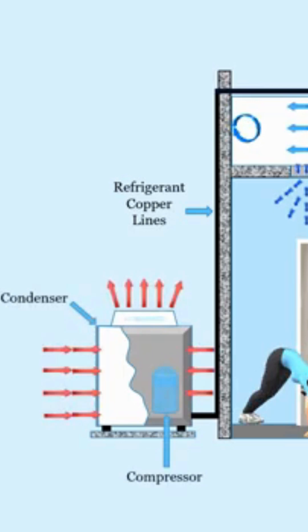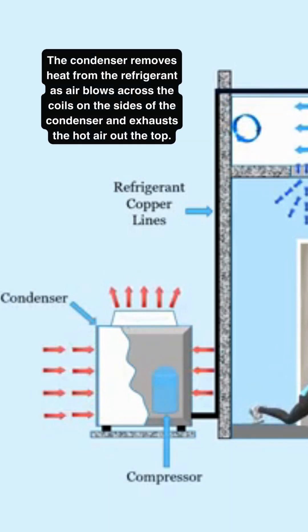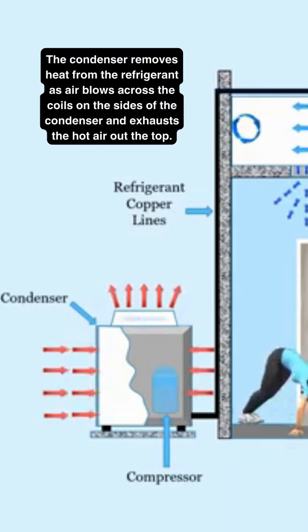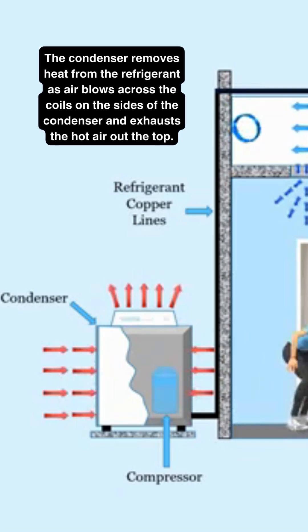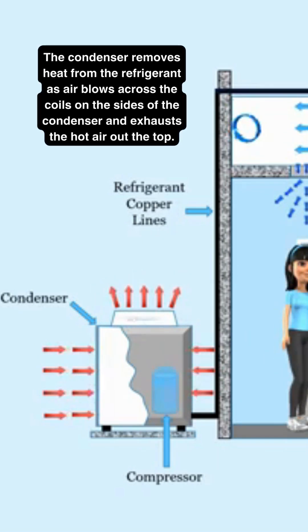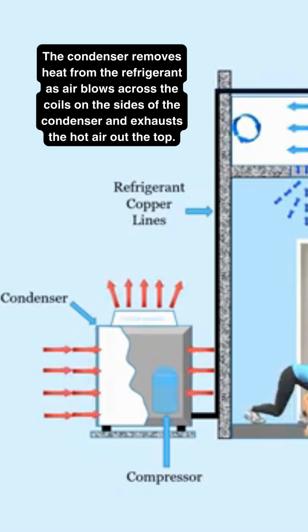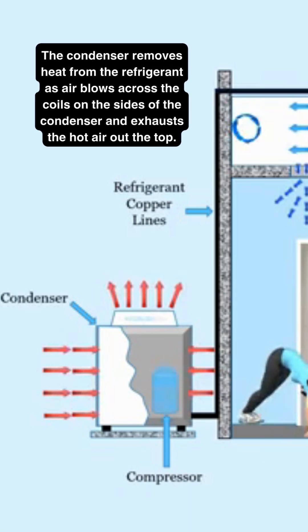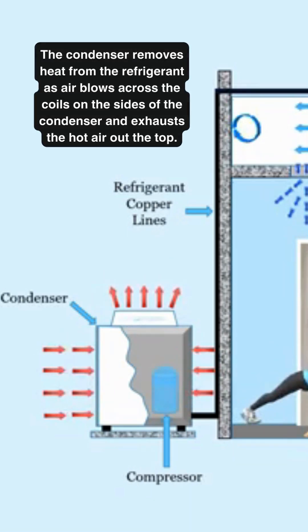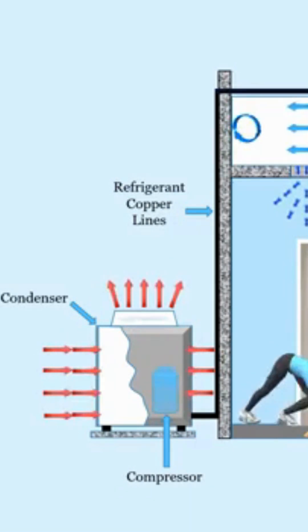Once the refrigerant gets outside, the condenser does the opposite the evaporator coil did. It removes the heat from the refrigerant as the air blows across the coils on the sides of the condenser and exhausts it out the top. This is why the air coming out of the top of your condenser is typically hotter than the outside air.